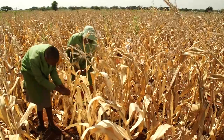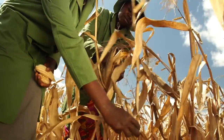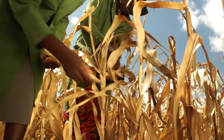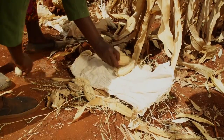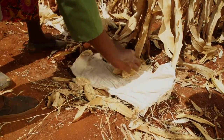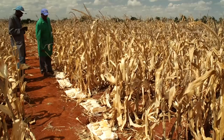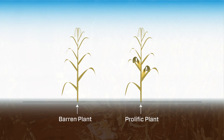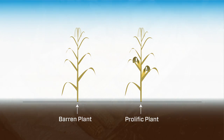The total number of ears harvested should be recorded at harvest. This data is used to determine prolificacy and prevalence of ear rot. It is possible to obtain fewer ears than the number of plants harvested due to barrenness, or more ears than the number of plants harvested due to prolificacy.